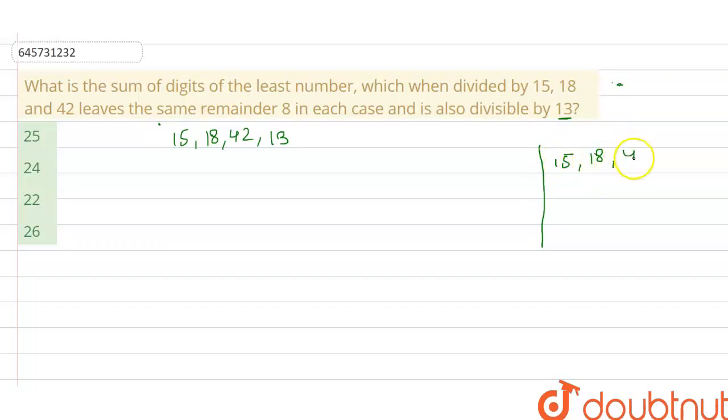LCM will be of 15, 18, 42 and 13. Right, so for the LCM, we have to take the least number. First prime number that I am using is 3, so 5, 6, and this is 14, and 13 remains the same.